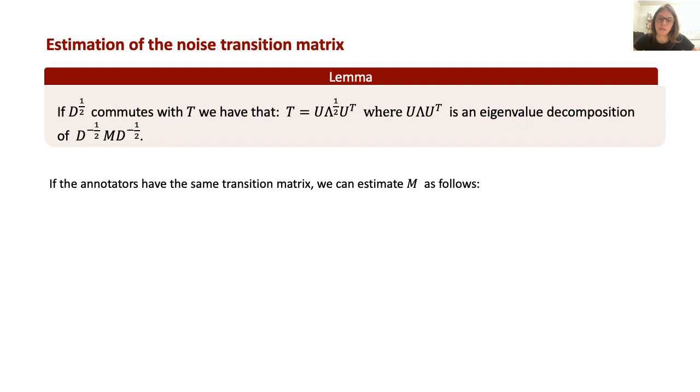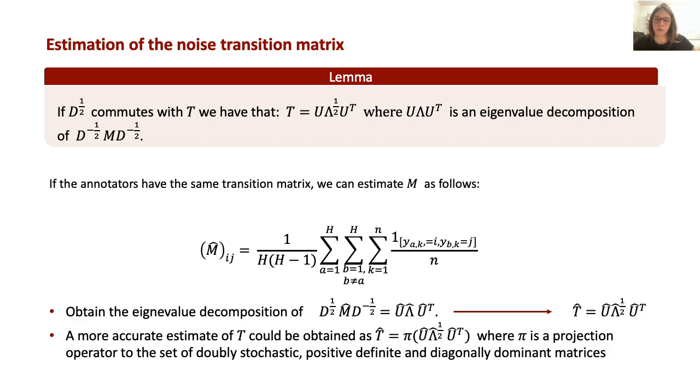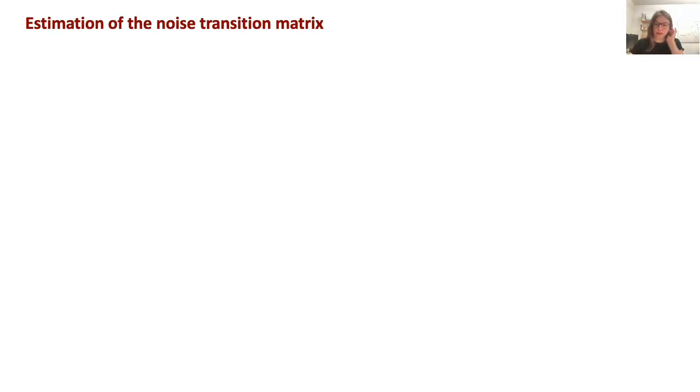We can employ the following lemma to estimate T, by first obtaining an estimate of M, for instance in the following way, next obtaining U and lambda hat through the eigenvalue decomposition of the matrix derived from multiplying the inverse square root of D by M, and again by the inverse of the square root of D. The decomposition already exists, since this matrix is symmetric, and notice that using directly the estimate of the lemma may result in a matrix that doesn't respect the constraints of the real T. So for a more accurate estimate of T, we can project into the set of double-stochastic diagonally dominant matrices, and this projection can be achieved by solving a convex optimization problem.